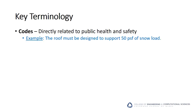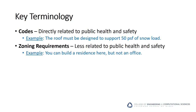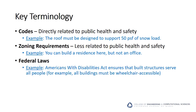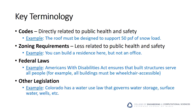Codes are directly related to public health and safety. An example of a code requirement is: the roof must be designed to support 50 PSF of snow load. Zoning requirements are less related to public health and safety — for example, you can build a residence here, but not an office. Federal laws impose targeted requirements on building projects; for example, the Americans with Disabilities Act ensures that built structures serve all people. There may also be other legislation, such as Colorado's water use law that governs water storage, surface water wells, and many other things.